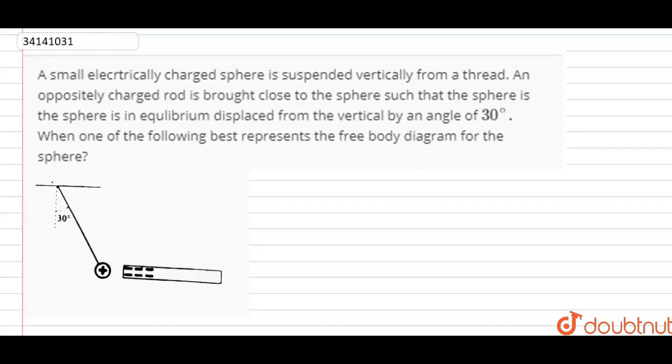Friends, today we have a problem where a small electrically charged sphere is suspended vertically from a thread, and an oppositely charged rod is brought close to the sphere such that the sphere is in equilibrium, displaced from the vertical by an angle of 30 degrees. Which of the following best represents the free body diagram for the sphere?